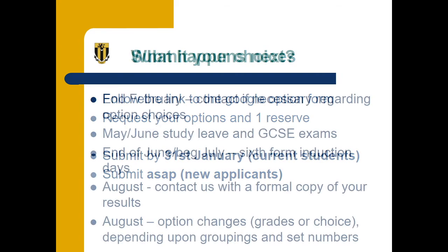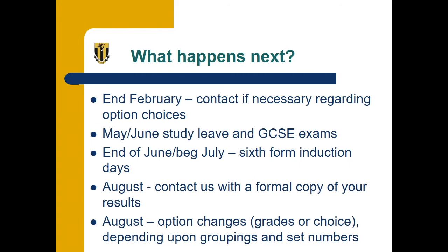If you could submit it as soon as possible, that would be fantastic. The timeline is likely to be: end of February, we'll contact you if necessary regarding your option choices; May or June, study leave and GCSE exams or assessments; end of June/beginning of July, Sixth Form induction days; August, results days. If you would be new to the school, you would need to bring us a formal copy of your results to confirm your place. If you're an existing student, you just need to consider whether you would like or need an option change.